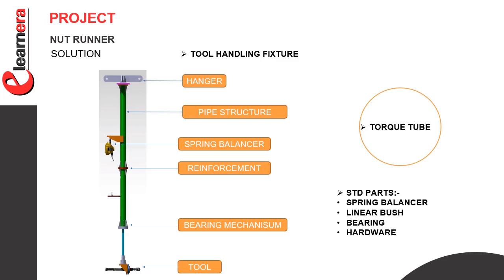This is the top tube. The top part is a hanger — with the help of the hanger, the top tube is fixed in the upper rail. The green part is a pipe structure to add reinforcement for strengthening. Here we add a linear bush for smooth up and down movement, and a bearing mechanism to rotate the tool. This is a DC tool. Here we can see a spring balancer — the tool can be moved up and down with the help of the spring balancer. We use MS pipe; the material of the hanger is EN8. Standard parts used include spring balancer, linear bush, bearing, and hardware.